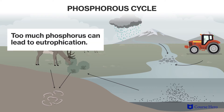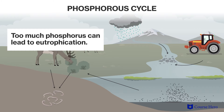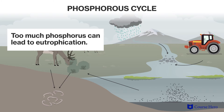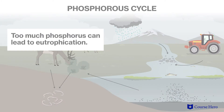This could be a problem because too much phosphorus can lead to eutrophication. During this process, there is a rapid growth of photosynthetic algae due to the increase in nutrients. After the algae die, they are consumed by bacteria that use oxygen in the process, leading to a drop in dissolved oxygen and putting the lives of aquatic species at risk.